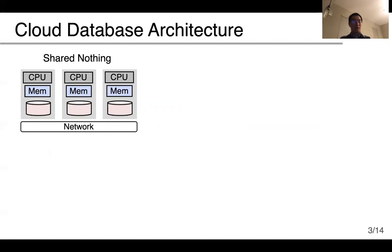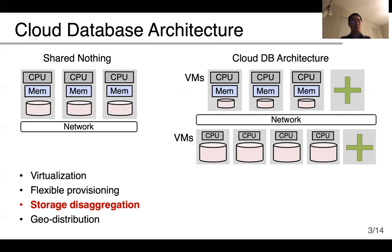A traditional database typically has a shared-nothing architecture, where each server contains local CPU, memory, and storage, connected using a shared network. A cloud database, however, commonly adopts the storage disaggregation architecture, which is more similar to shared disk rather than shared-nothing. The compute nodes and storage nodes are disaggregated, and each side can scale independently. Disaggregation allows compute nodes to be deployed based on workload requirements. As queries are executed in compute nodes, data is loaded from storage nodes, and local memory or storage can be used for temporary data or caching, but not permanent storage of input data.